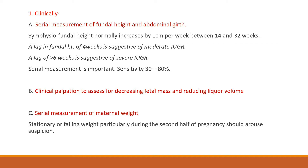Clinical diagnosis begins with serial measurement of fundal height and abdominal girth — serial measurement is very important, as a single measurement may not give adequate information. The symphysio-fundal height normally increases by 1 cm per week between 14 to 32 weeks. A lag in fundal height of 4 weeks is suggestive of moderate IUGR, and a lag of more than 6 weeks suggests severe IUGR, with sensitivity of around 30 to 80%. Clinical palpation assesses decreasing fetal mass and reducing liquor volume. Serial maternal weight measurement during the second half of pregnancy is also important — stationary or falling weight should arouse suspicion.